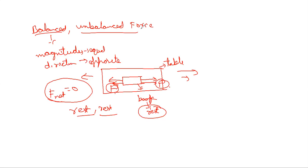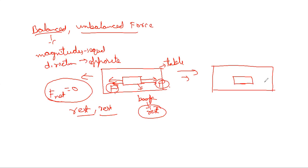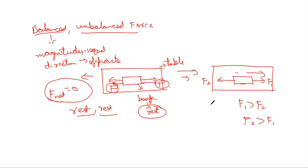Now let us see the case of unbalanced force using the same example — the same horizontal table and the same book. This time I will apply force F1 in this direction and force F2 in the opposite direction. Now if F1 is greater than F2, what will happen? It will move in the direction of F1. Similarly, if F2 is greater than F1, it will move in the direction of F2. These two forces we call unbalanced forces.